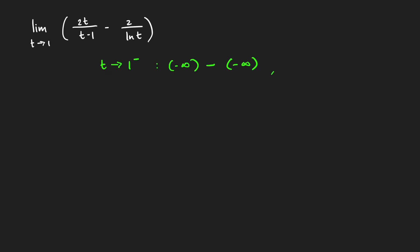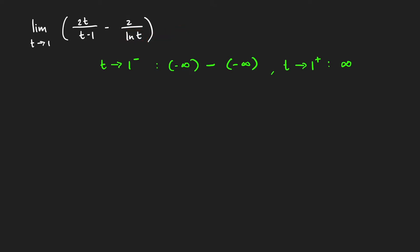When t approaches 1 from the right, (t−1) approaches 0 from the right, so 2/(t−1) approaches positive infinity. Since ln is an increasing function and ln(1) = 0, ln t also approaches 0 from the right, so 2/ln t approaches positive infinity as well. This is again infinity minus infinity — an indeterminate form. So clearly, this limit has the form infinity minus infinity from both sides.